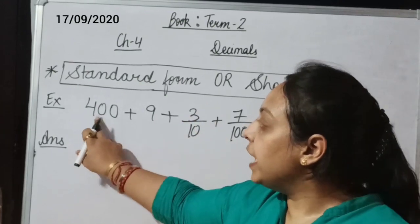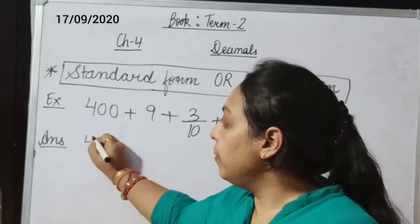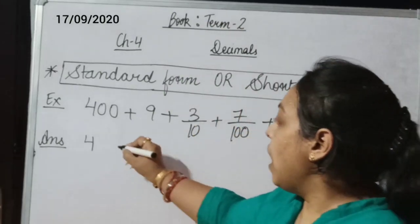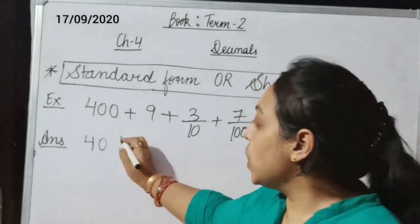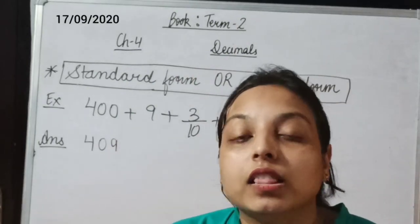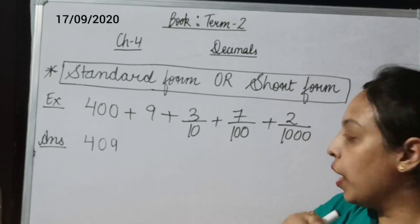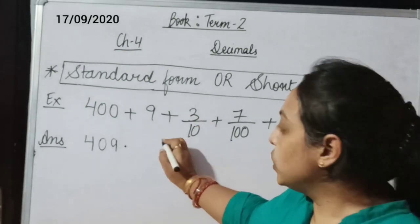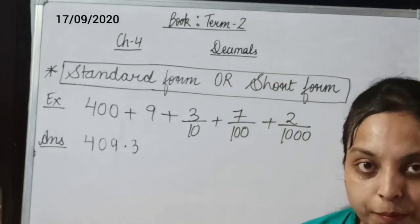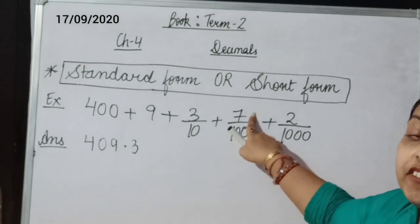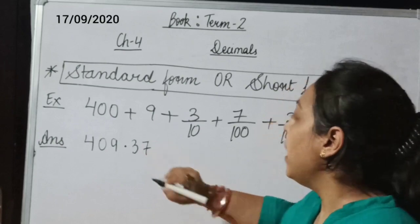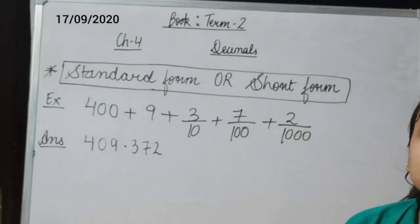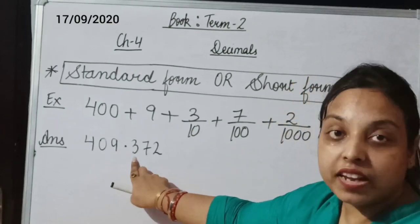In this example the number is given in fractional expansion and we have to write the number. We see 400, meaning 4 is at the 100s place. There is no 10s place value given, so we write 0 there. Then 9 is at the 1s place. After the 1s place we put a decimal point to separate the whole part from the decimal part. Then 3 is at the 10ths place — first place after decimal. Then 7 is at the 100ths place. And 2 is at the 1000ths place. So the number for this fractional expansion is 409.372.